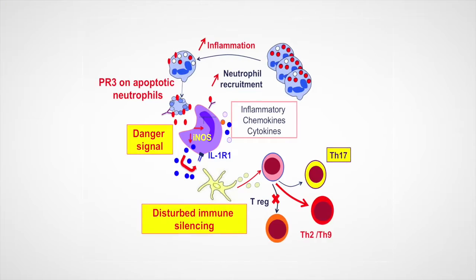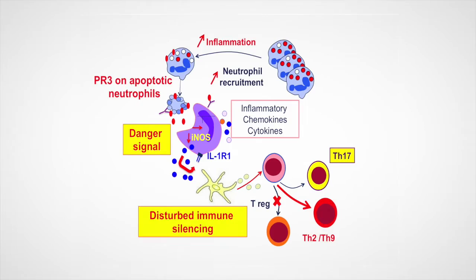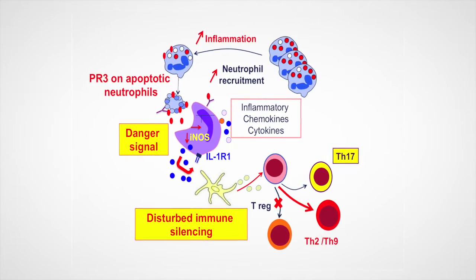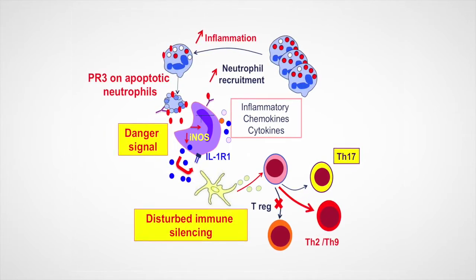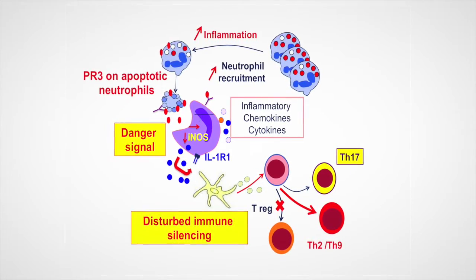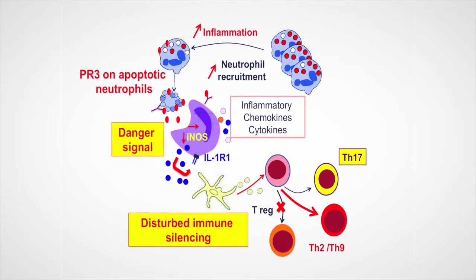We discovered that PR3 was expressed on the membrane of apoptotic neutrophils, and this expression was increased in neutrophils from GPA patients. In the current study, we show using in vitro and in vivo animal models as well as human samples that PR3 acts as a danger signal for macrophages, thus completely disrupting the immune silencing and favoring autoimmunity.